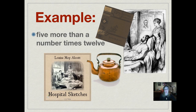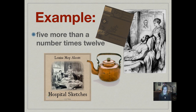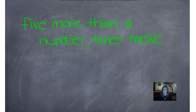Here's our first example: five more than a number times 12. Those pictures are of Louisa May Alcott — she actually served as a nurse during the Civil War, then wrote about it in her journal, which was published as Hospital Sketches. We're going to use our reading comprehension skills to write these words as an expression. Remember, an expression doesn't have an equal sign or an answer — it's just the first part of the problem.